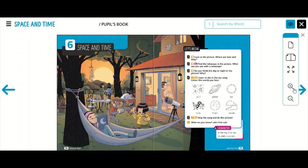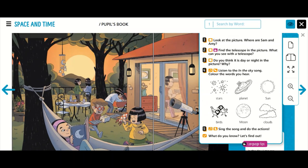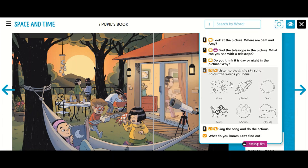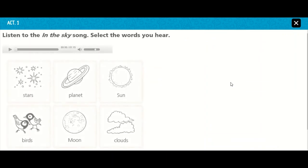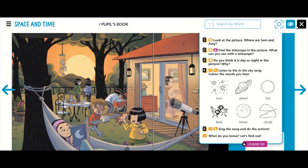Let's go to the activity number 4 now. Listen to the In The Sky song. Color the words you hear. OK, guys. Let's read the words. Stars. Planet. Sun. Earth. Moon. Clouds. So, now it's your turn. You are going to do the activity by yourselves. You need your computers and you have to click on the activity and then play the audio and color the words you hear on your books. Try to do your best.